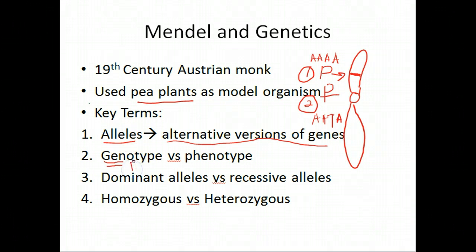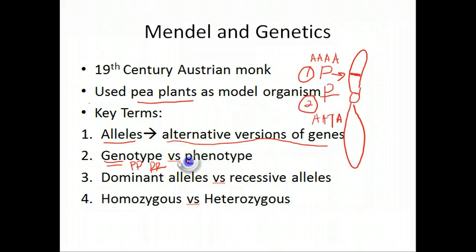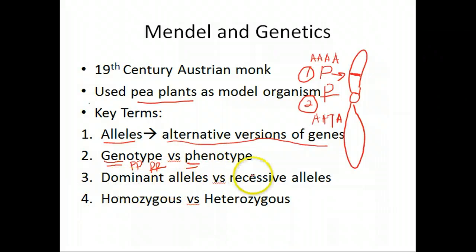Genotype versus phenotype: literally, genotype is the genetic makeup of an organism. For example, an organism with genotype PP represents something, and an organism with genotype pp — two lowercase p alleles — is a different genotype. Phenotype is the physical characteristic created by that genotype, so it's the physical appearance of the organism based on its genotype. A helpful mnemonic: 'geno' for gene, and 'ph' for physical characteristics.